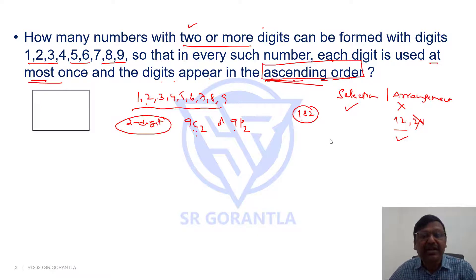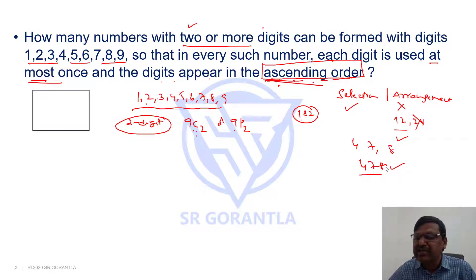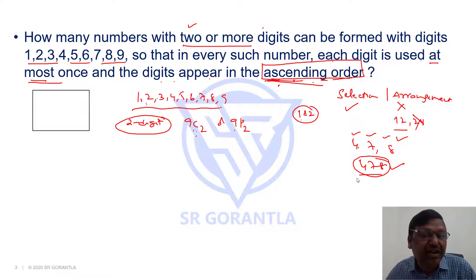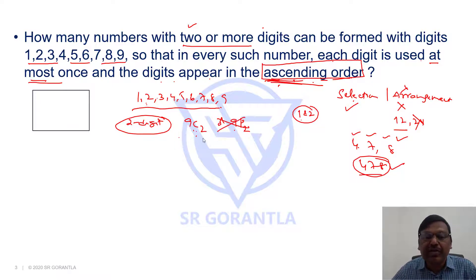Consider a three-digit example: select digits 4, 7, and 8. Because of the ascending order condition, only 478 is possible using these three digits. Can you form any other number with 4, 7, and 8 that is in ascending order? No. That is why it is only a selection, not an arrangement.